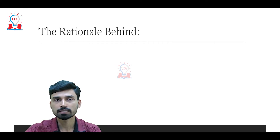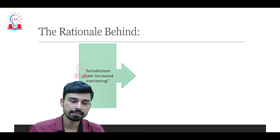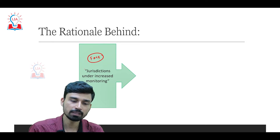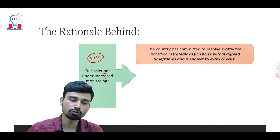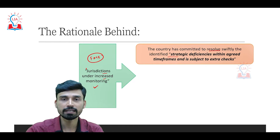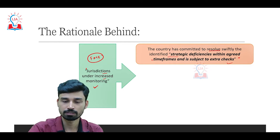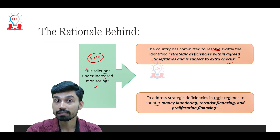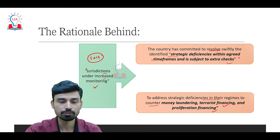The terminology actually used by FATF for the grey list is 'jurisdictions under increased monitoring.' Once countries are placed under increased monitoring, they must commit to swiftly resolving identified strategic deficiencies within agreed timeframes, and are subject to extra checks by FATF on their financial systems. Countries also have to take steps to address strategic deficiencies in their regimes to effectively counter money laundering, terrorist financing, and proliferation financing.